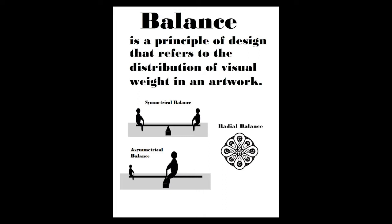With symmetrical balance, imagine your artwork has an invisible line going down it, where it would be that central point on the seesaw. With symmetrical balance, the right and the left side are the same, so there's no problem. Sometimes it's even a mirror image. Sometimes it's just equally weighted — it just looks like they're the same.